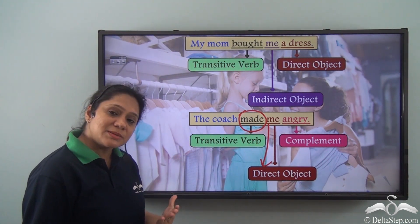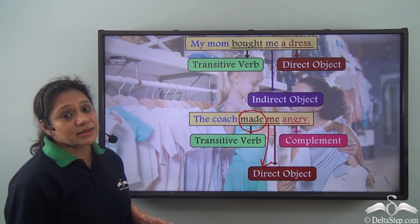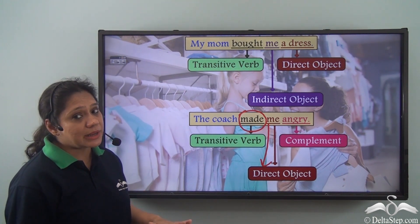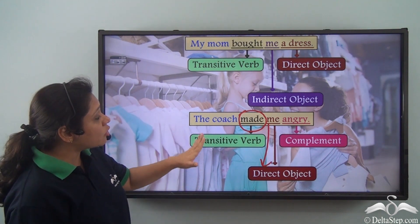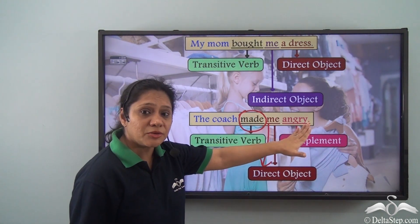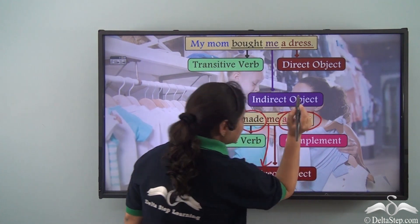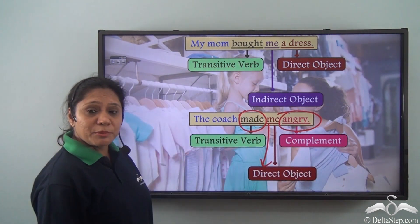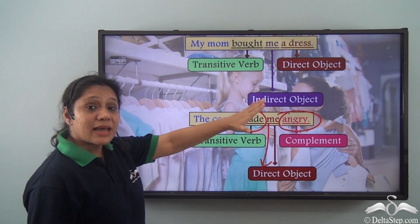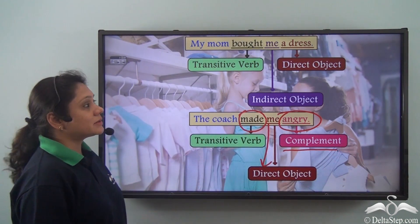But if I say 'The coach made me angry,' in this sentence 'the coach' is the subject and 'made me angry' is the predicate, which has a transitive verb 'made.' The coach made whom? The coach made 'me,' so 'me' is the direct object. If I just say 'the coach made me,' the sentence will not be meaningful. But if I say 'the coach made me angry,' then 'angry' is completing the predicate — hence 'angry' is the complement.